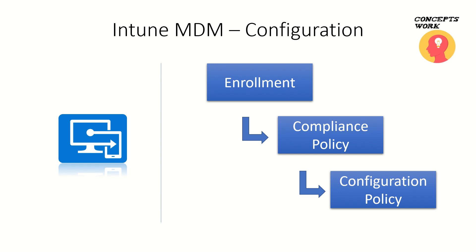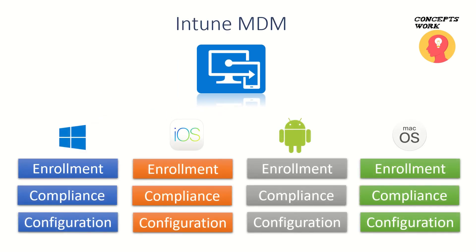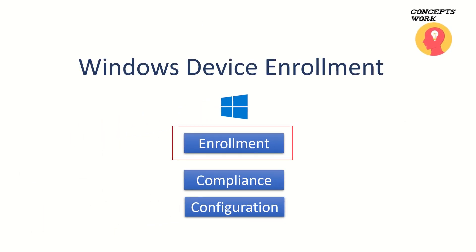All three sections of policies — Enrollment, Compliance, and Configuration — can be defined for four different platforms: Windows, iOS, Android, and macOS. It is practically not possible to cover all of them in one single video, and since this is the first video of the MDM series, we are starting off with Windows Enrollment Settings.